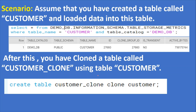Next question. Here is the scenario: assume that you have created a table called customer and loaded data into this table. You might have inserted some data. If you see the metadata from TABLE_STORAGE_METRICS, I have created this customer table in the demo DB database. When you query data from the metadata table called TABLE_STORAGE_METRICS, this is the ID for this table. Here is the syntax to create a clone table: CREATE TABLE table_name CLONE source_table.